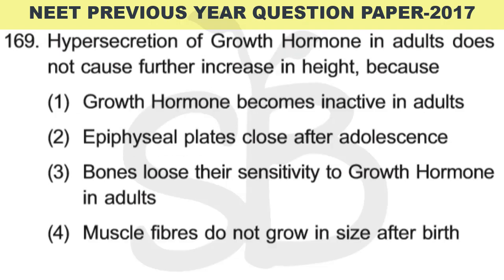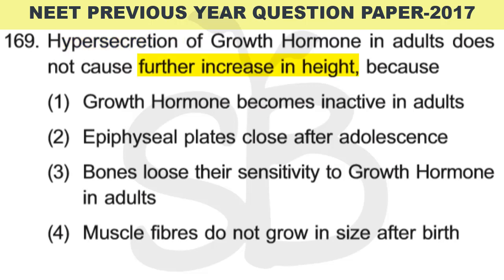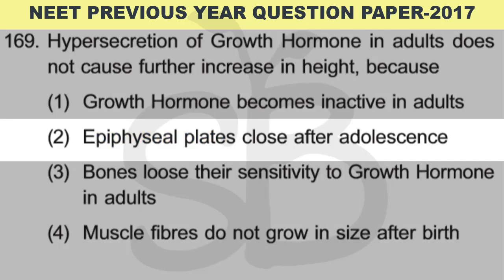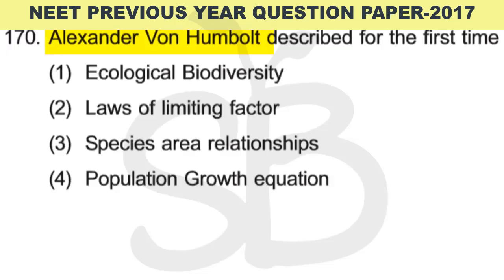Question number 169: Hypersecretion of growth hormone in adults does not cause further increase in height. Why? The bones grow because of epiphyseal plates, which are open during adolescence. After adolescence, these epiphyseal plates close, so even if growth hormone is overproduced, the bones cannot grow further. The correct answer is option 2: epiphyseal plates close after adolescence.